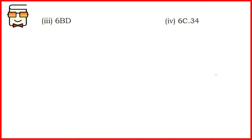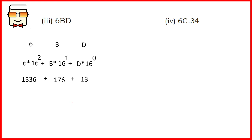The third part asks you to convert 6BD. This value contains two alphabetical literals, B and D. Multiply the values corresponding to each literal by the appropriate powers of 16. When you do so, the final answer is 1725. At each step you can verify your answers, and if you face any problem please let us know in the comment section below.